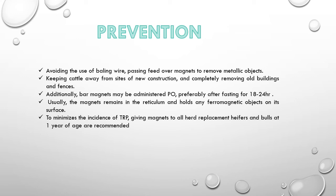Coming on to the prevention of TRP — prevention is better than cure. Preventive measures include avoiding the use of baling wire, passing feed over magnets to remove metallic objects, and keeping cattle away from sites of new construction and completely removing old buildings and fences. Additionally, bar magnets may be administered preferably after fasting for 18 to 24 hours; the magnets remain in the reticulum and hold any ferromagnetic objects on their surface. To minimize the incidence of TRP, giving magnets to all herd replacement heifers and bulls at one year of age is recommended.